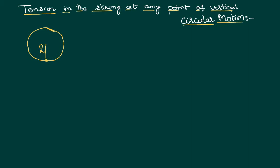We would like to calculate the tension in the string which is attached with a mass moving in vertical circular motion at different locations. For example, we want to calculate the tension when the mass is at the bottom. Let the body at that point be moving with a velocity V1.